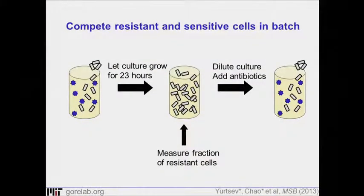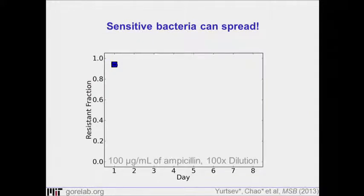What we did was compete these two strains — bacteria resistant to the antibiotic and bacteria sensitive — growing them in well-mixed batch culture. We mix them together, let them grow, dilute each day, and track the dynamics of these two subpopulations over time by flow cytometry. The first thing you might ask is: if you start with a population that is 95% resistant — just a few sensitive cells — and track the dynamics in the presence of 100 micrograms per mL ampicillin, which is about twice what we typically use in the lab for selection and above clinical concentrations.